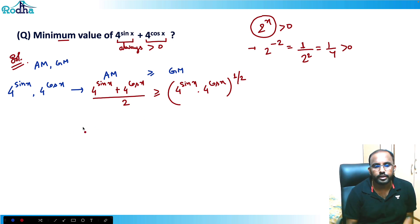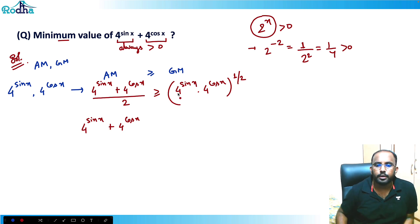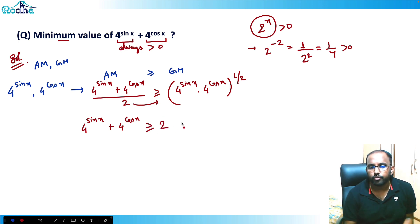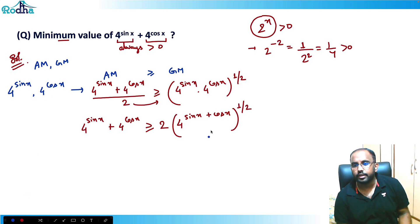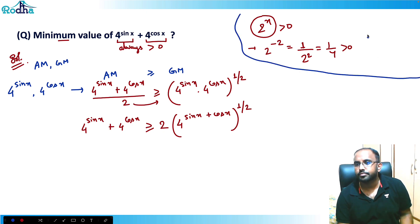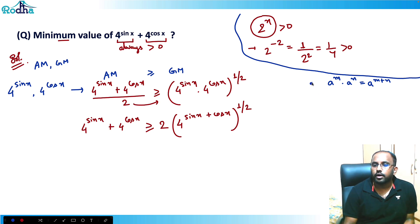So 4^(sin x) + 4^(cos x) ≥ 2 · √(4^(sin x) · 4^(cos x)). Using the property a^m · a^n = a^(m+n), the geometric mean simplifies to 4^((sin x + cos x)/2). So we get 4^(sin x) + 4^(cos x) ≥ 2 · 4^((sin x + cos x)/2).